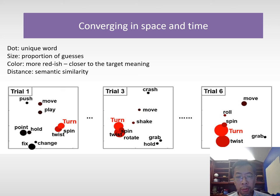By trial six, we saw very few dots, and those guesses were really close to the ground truth. Words like spin were semantically very close to the target meaning turn, demonstrating strong convergence through cross-situational statistical learning.